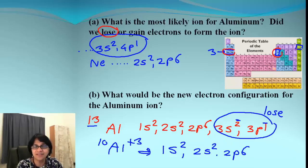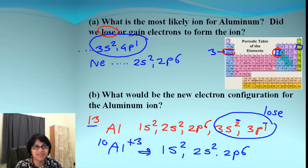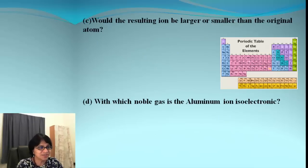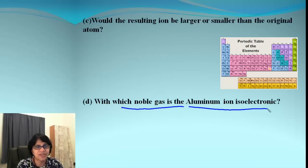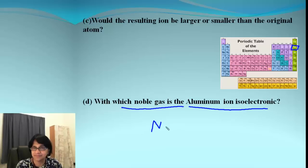What is remaining is the electron configuration 1s² 2s² 2p⁶. That looks like the noble gas which comes before aluminum, which has atomic number 10, which is neon. So this question is asking which noble gas aluminum is isoelectronic with — and that is neon, because neon has 10 electrons and the aluminum ion also has 10 electrons.